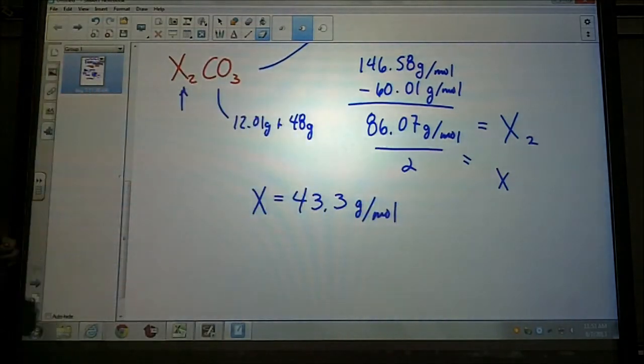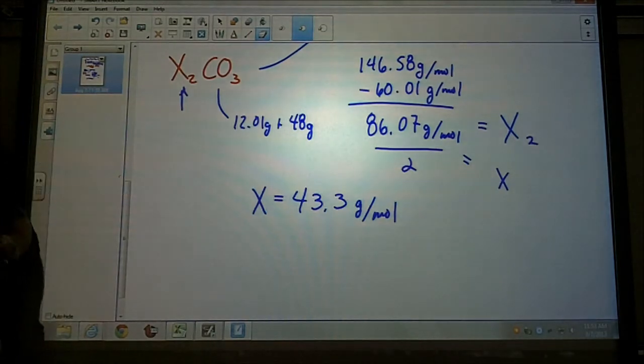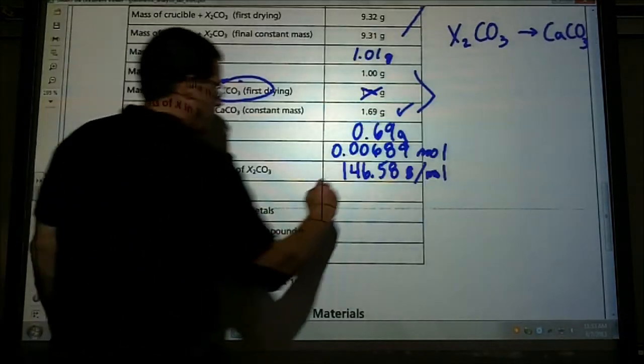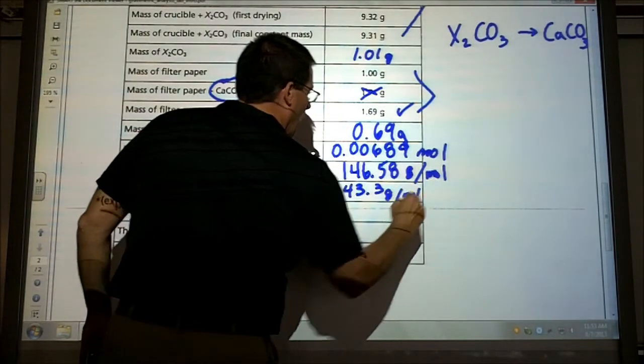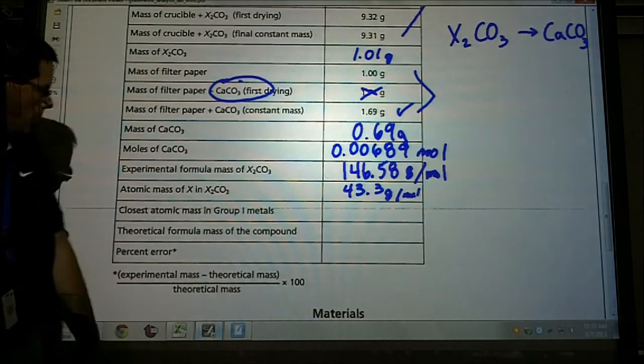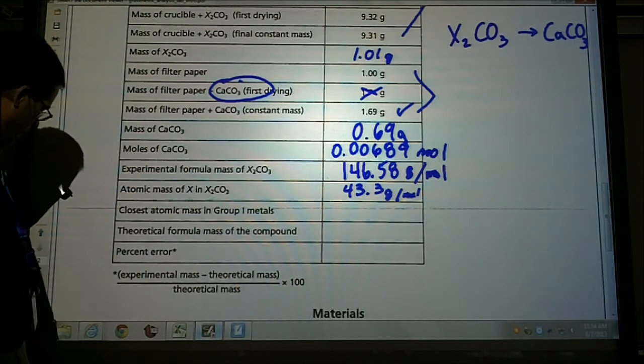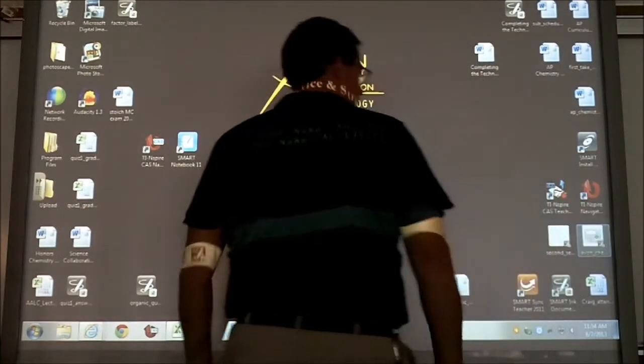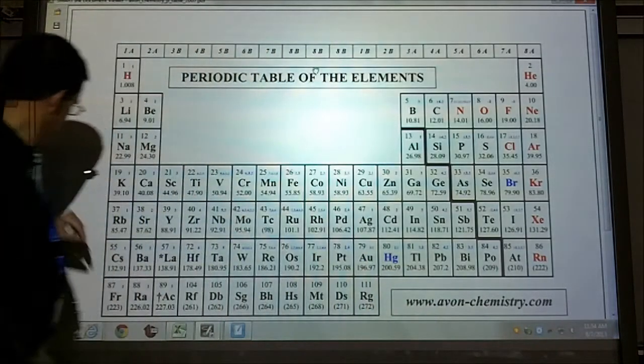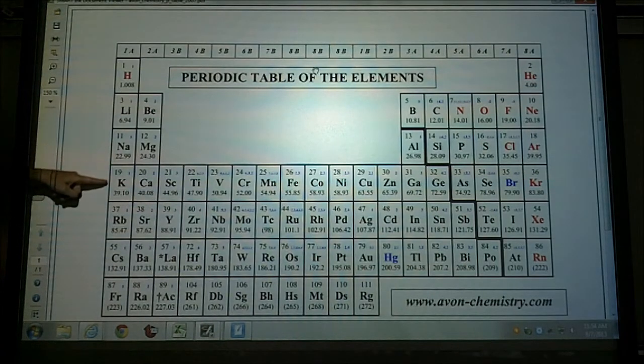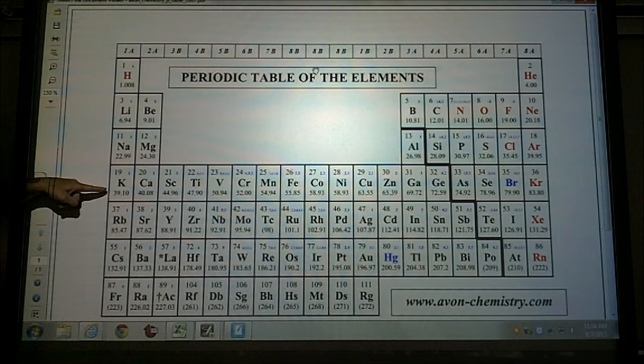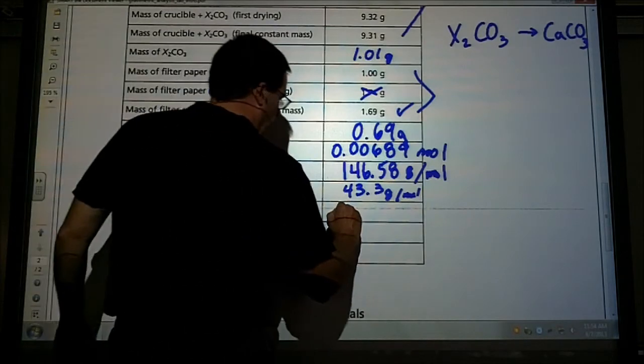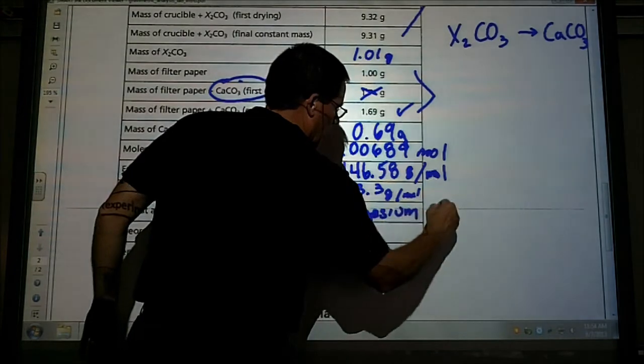We just found the formula mass for this compound. The next thing that we want to do, let's write that down in our data table. So the atomic mass we said it was 43.3 grams per mole. And closest atomic mass in group 1A metals, let's see if I can find my periodic table. If I come over here to group 1A and look for something around 44, well there's 39. It's got to be potassium. Potassium is definitely the closest one on this one. So we'll say that this represents potassium.